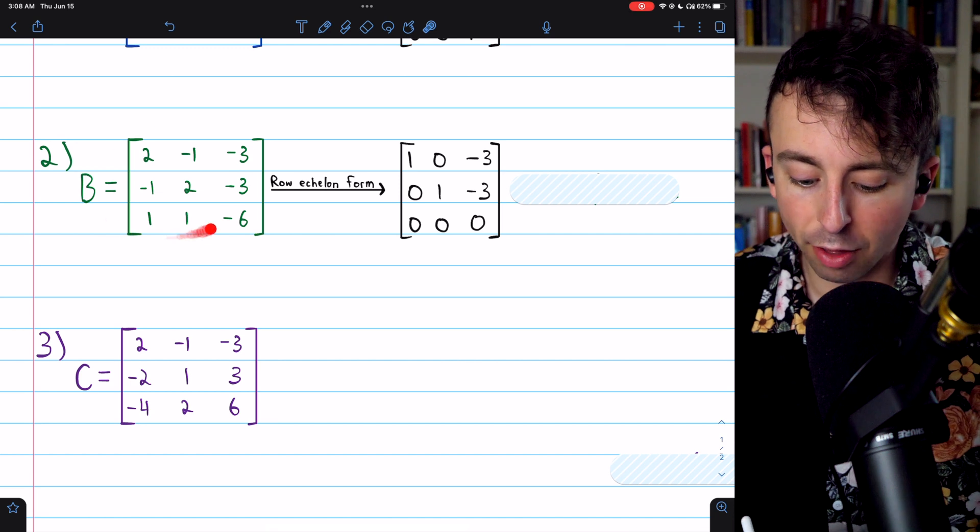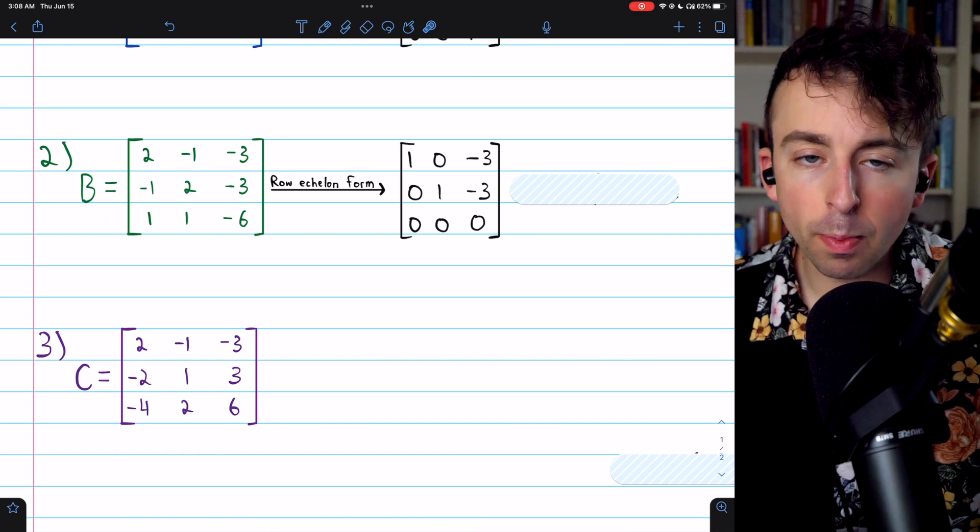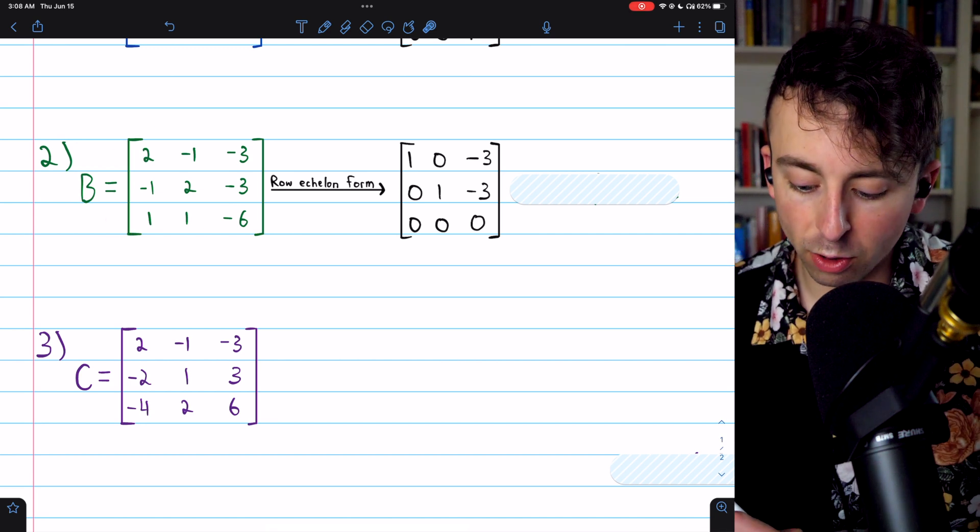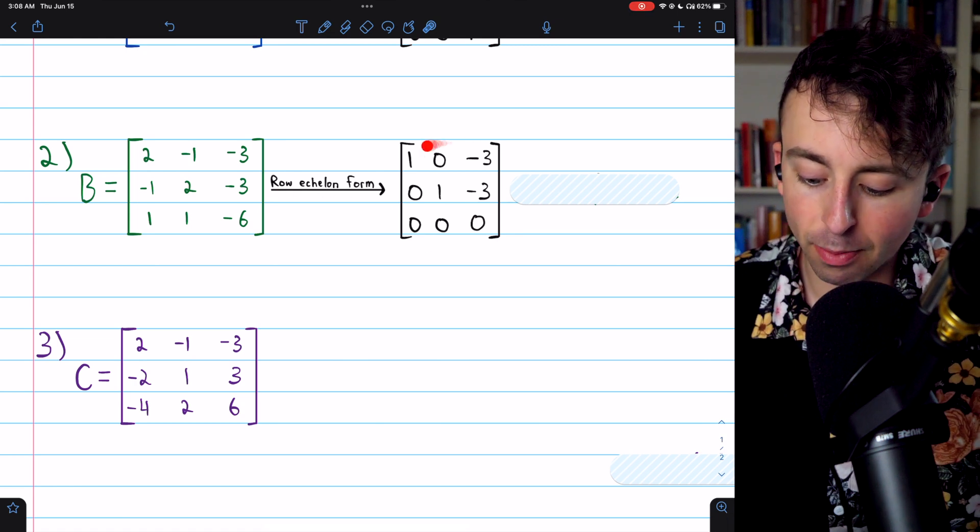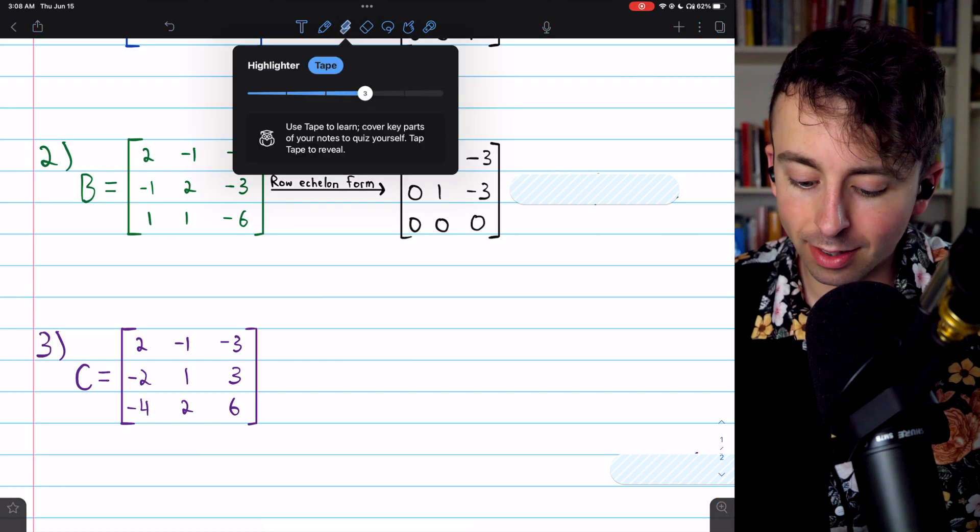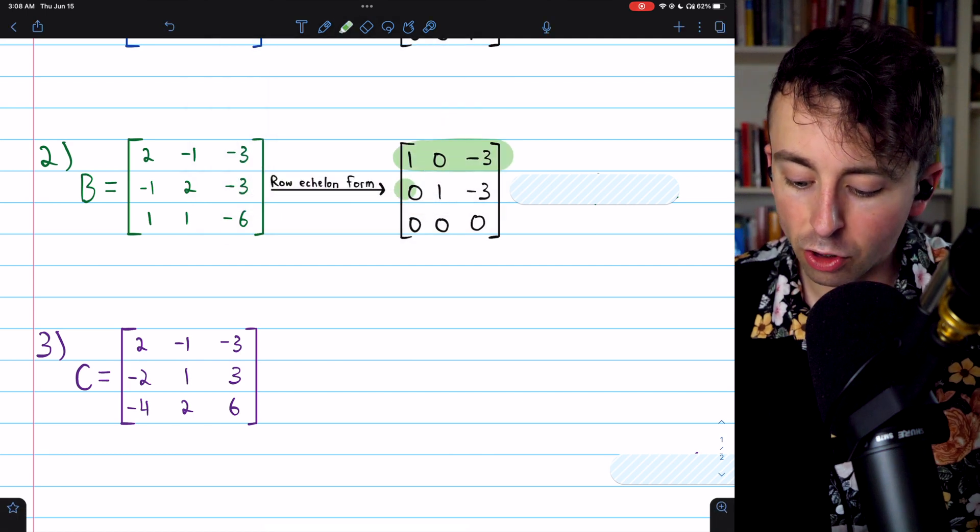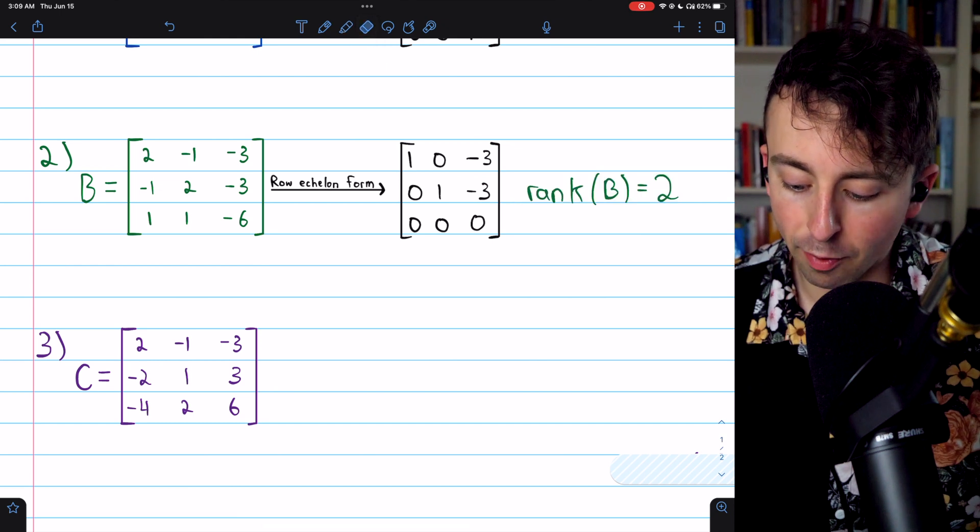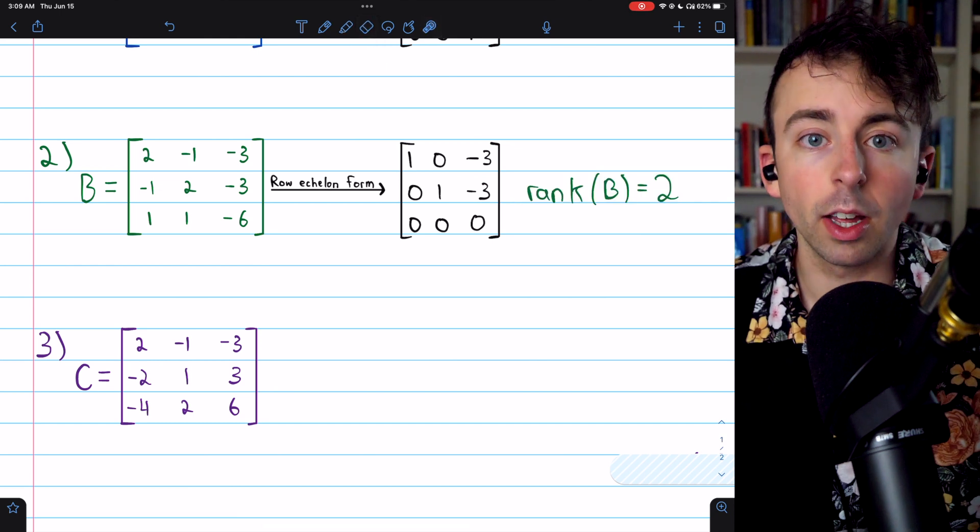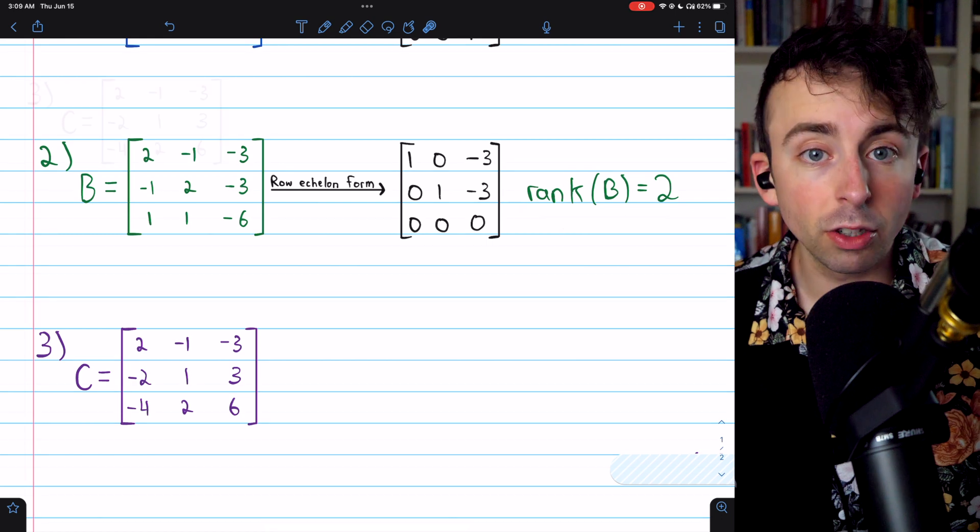we have this three by three matrix B. If we perform elementary row operations to transform it into its reduced row echelon form, we get this matrix here, which you can see has one, two non-zero rows. Thus, the rank of matrix B, the dimension of its row space, is two.